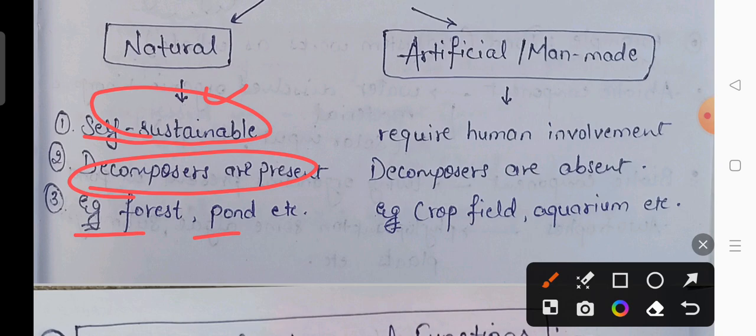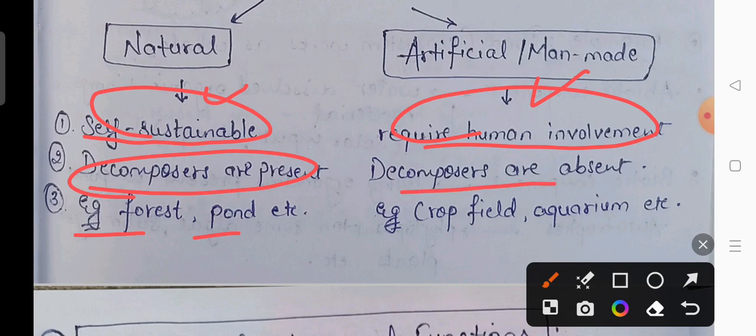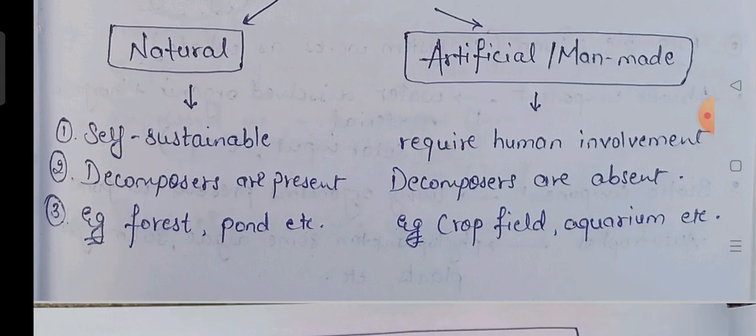Artificial ecosystem aisa hota hai jise human involvement ki zaroorat hai. Agar human interaction nahi hoga toh woh ecosystem properly work nahi kar payega. Artificial ecosystem mein decomposers absent hote hain, saprophytes nahi paye jate. Iska common example hai crop field, aquarium, etc.